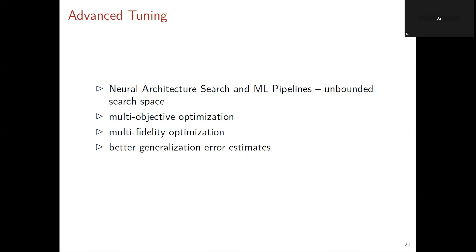You can do multifidelity optimization, particularly relevant for deep neural networks: instead of every evaluation on the full model, you do a lower-fidelity approximation that gives an approximate answer much more quickly. For example, don't train until convergence, only train for 10 epochs, or train on a subset of the data. You can build hierarchies of different evaluation fidelity levels and spend resources on evaluations that matter, avoiding spending a week training a deep neural network that turns out to be not competitive at all. Another challenge is that this kind of tuning requires nested cross-validation, and you can observe meta-overfitting where the hyperparameter setting found is specific to the dataset and doesn't generalize even to other data from the same distribution.